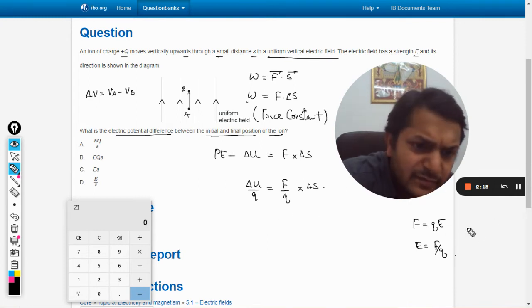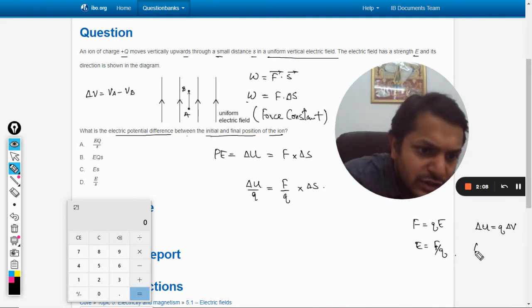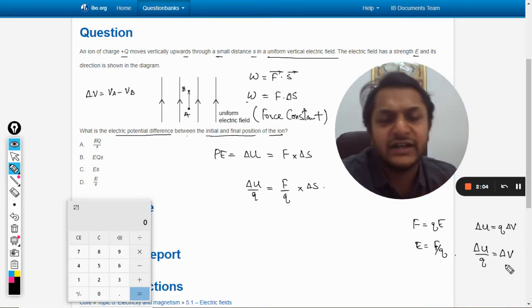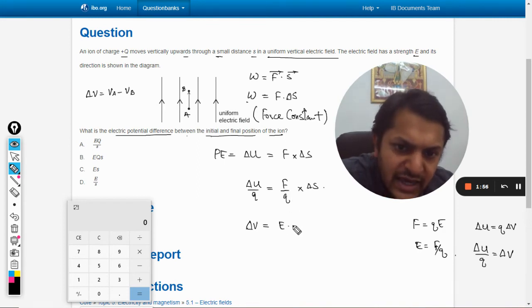When the potential energy is given by q into delta V, the change in potential difference into q is the potential energy. So delta U by q will be given by delta V, that is the total change in potential. So this becomes delta V, this F by q becomes E, and this delta s will remain as delta s.